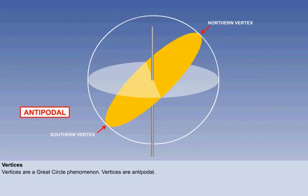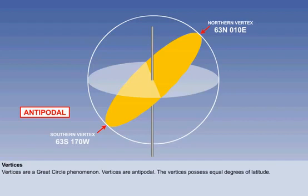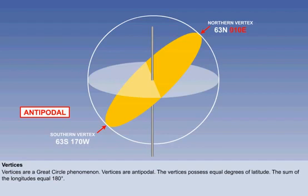From the example on the screen, the northern vertex of the great circle is 63 degrees north and 10 degrees east. The southern vertex will have the same value of latitude, except it is south — in this case, 63 degrees south. The great circle will have these two antipodal points on a meridian and its anti-meridian. In this example, the northern vertex is on the 10 east longitude meridian, and the southern vertex is on the 170 degrees west longitude anti-meridian. The sum of the two longitudes will always equal 180 degrees, indicating a meridian and its associated anti-meridian.